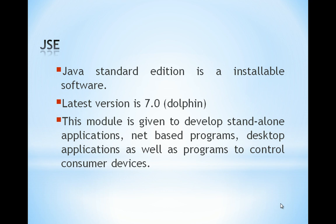Standard Edition is an installable software. If you want to install Java on your computer, you have to install Java Standard Edition. The latest version is 7.0. By using this version you can develop standalone programs capable of running on a computer, as well as network-based distributed programs available on multiple computers through the internet, desktop applications, and programs to control consumer devices — that is, you can write a program to control hardware also.